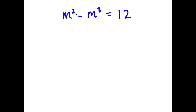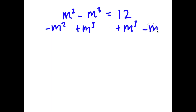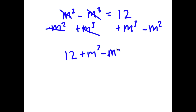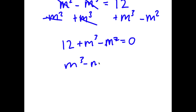So in this problem, I have m squared minus m to the power of 3 is equal to 12. To solve this, I'm going to first add m to the power of 3 on both sides and subtract m squared on both sides. So then these two cancel out, and now I have m to the power of 3 minus m squared plus 12 is equal to 0.